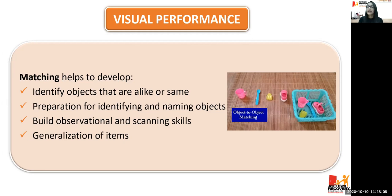Matching builds observational and scanning skills. We start from an array of one and move up to an array of ten, which helps improve attention and scanning. It also helps with generalization — most of our kids have problems with generalizing. We start with identical object-to-object matching, then identical picture-to-picture, then object-to-picture and picture-to-object, and sorting non-identical items, exposing the child to various representations of the same items.